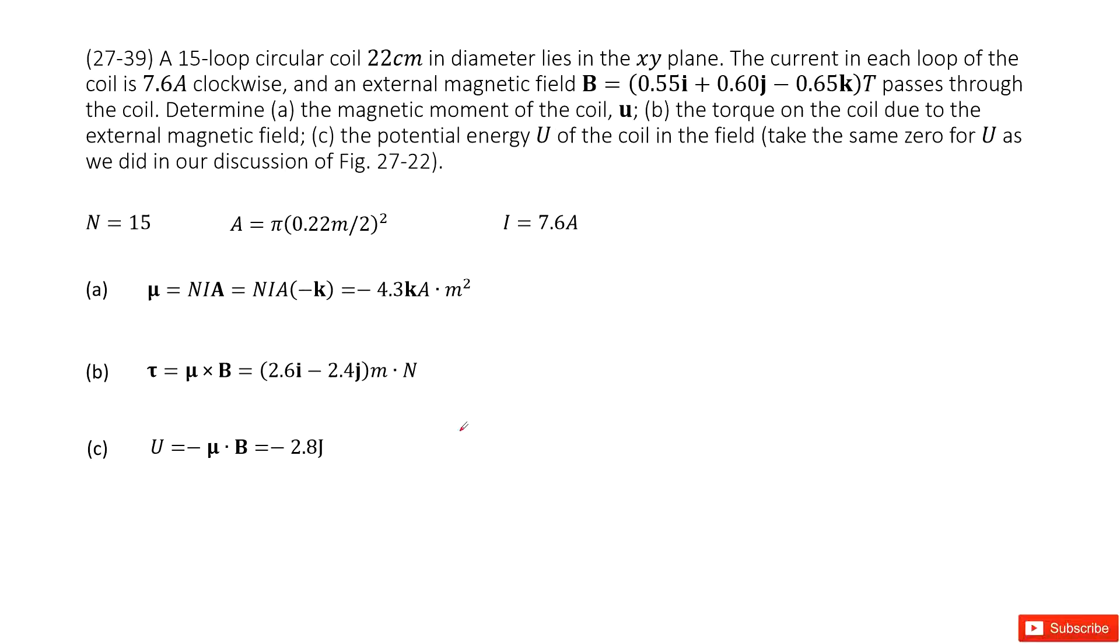So we have a current loop. Some quantities are given, such as how many turns? 15. Then the cross-sectional area we can find from the diameter. The diameter is given there. And also the current is given. And you can see the magnetic field is given in vector format.